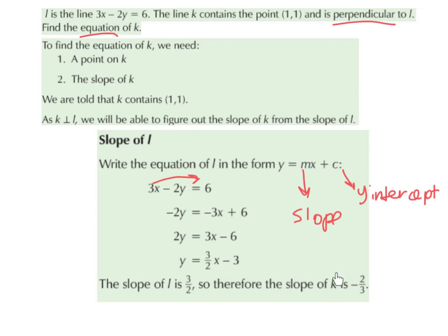Therefore the slope of k is minus 2 over 3. For perpendicular slopes, we turn the fraction upside down and change the sign. So 3 over 2 becomes 2 over 3, and the plus becomes a minus. So to find the slope of a line perpendicular to another line, we flip the fraction and change the sign — giving us minus 2 over 3.